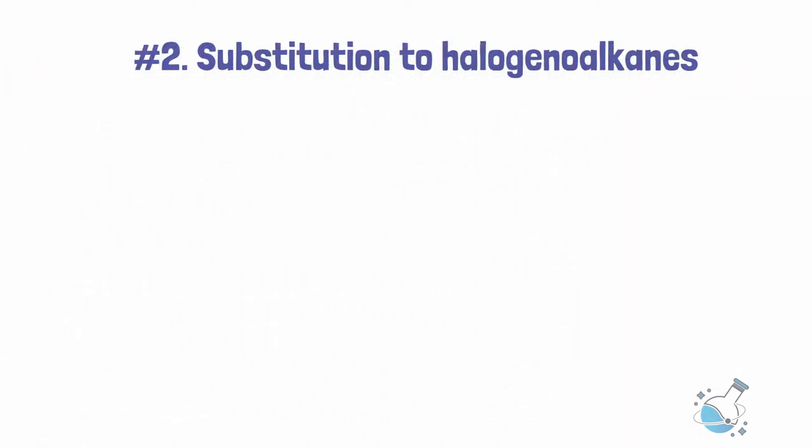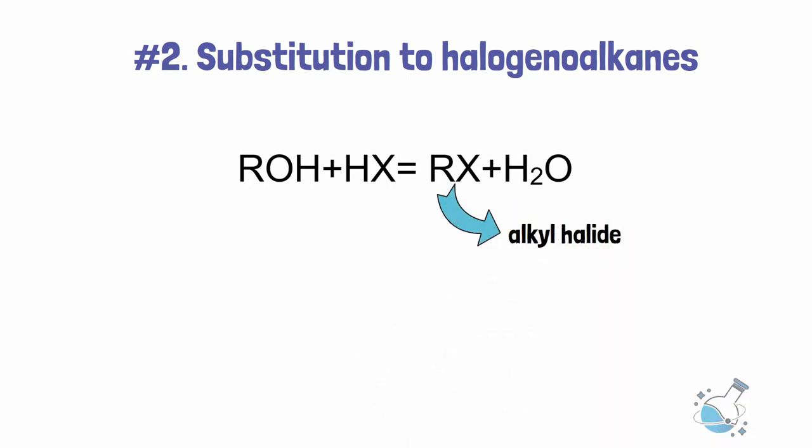Number 2. Substitution to halogeanoalkanes. One of the popular methods of making an alkyl halide is by the reaction of hydrogen halides with alcohols. Alcohols reacting with hydrogen halides produce water and alkyl halides, alternatively known as halogeanoalkanes.